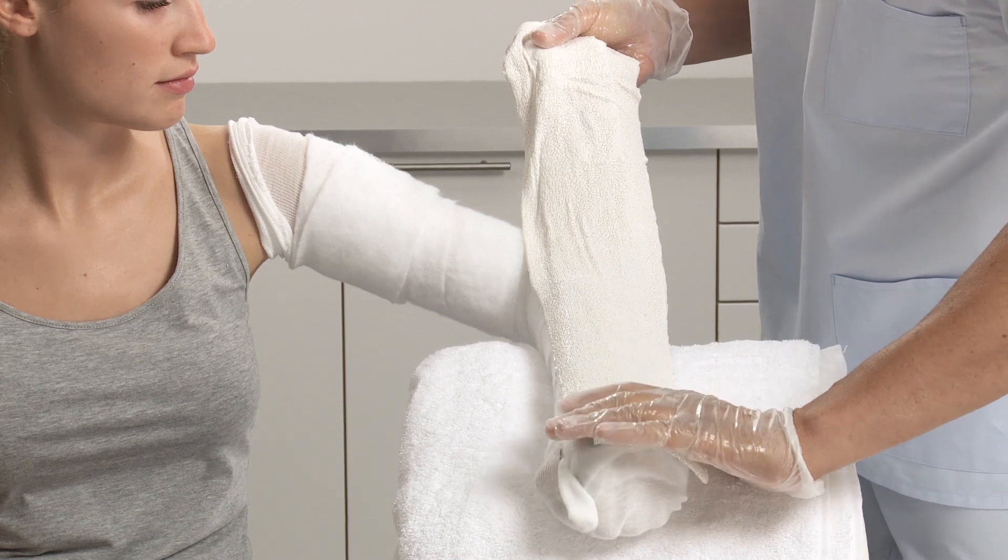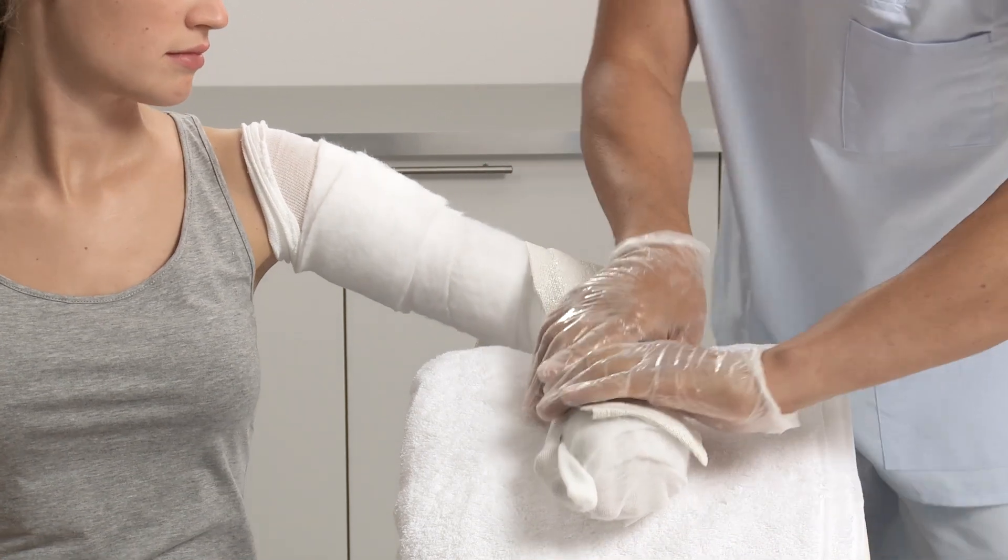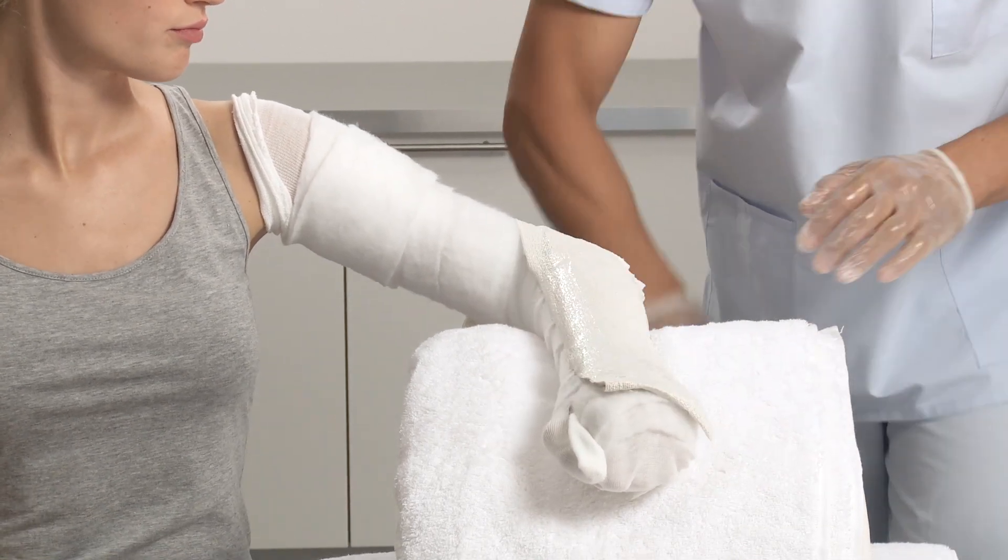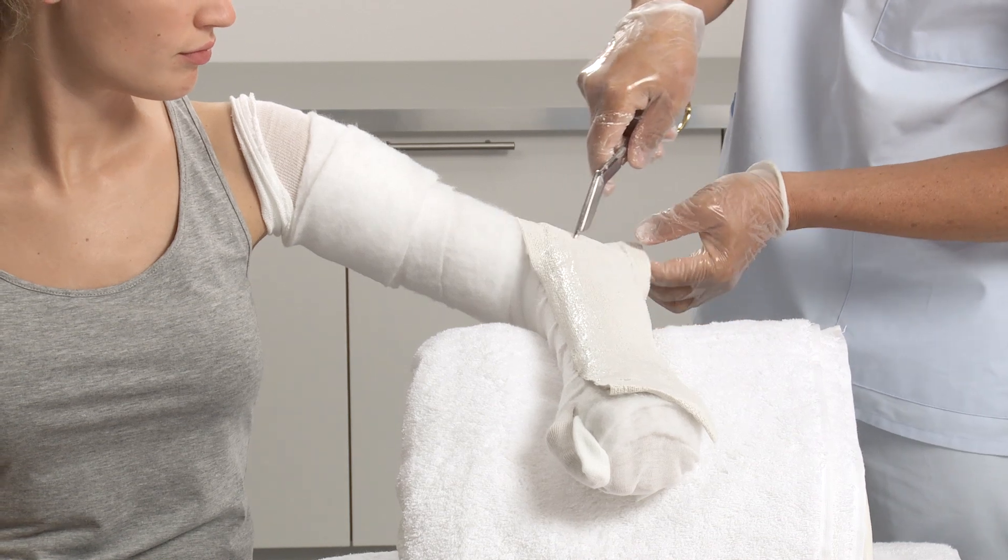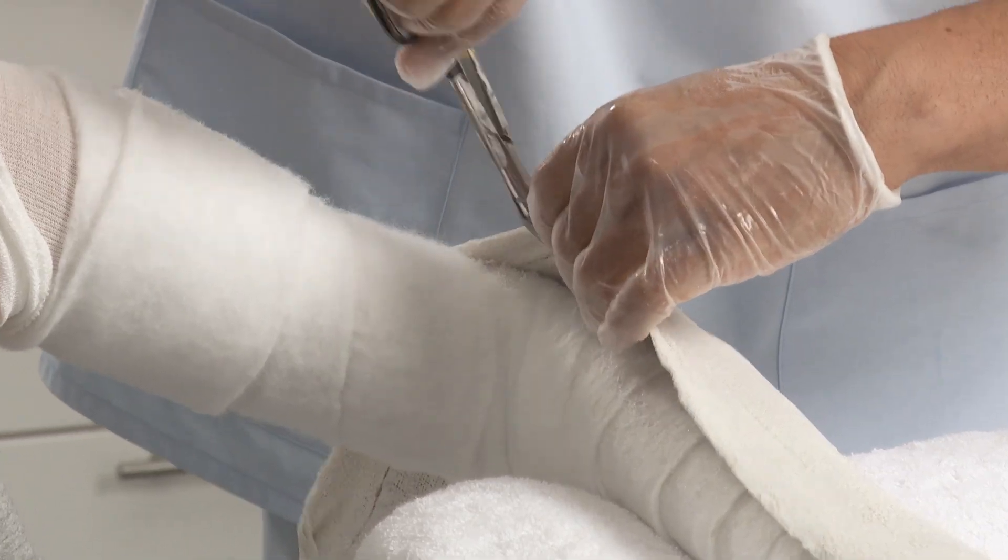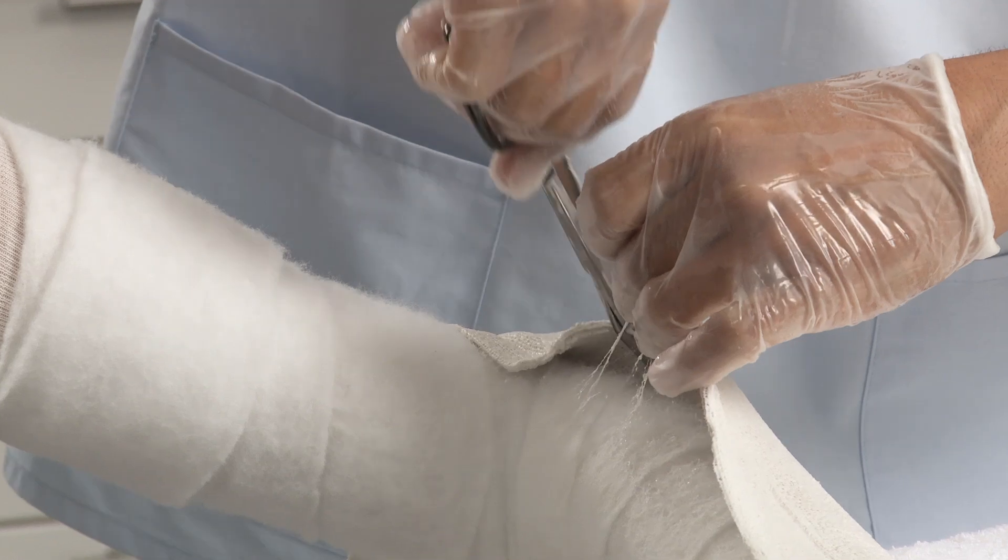Prepare a second splint as before. Apply the first splint onto the patient's lower arm and gently smooth down. Cut away any surplus splint.